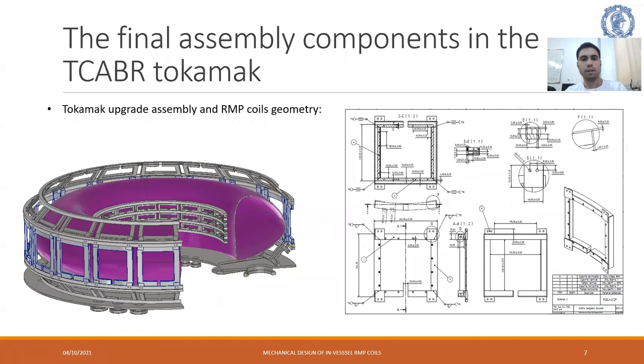The upgrade assembly and RMP coils geometry. Here we can see C coils and here we can see I coils. And here we can see CP coils, the entire assembly on the Tokamak. Here we can see technical draw of the C coils. Thank you very much.